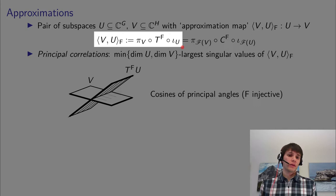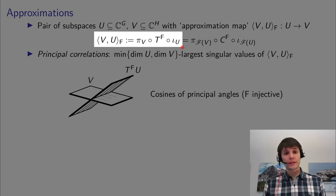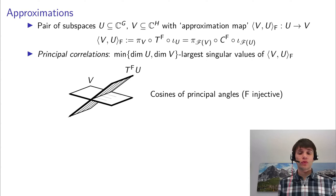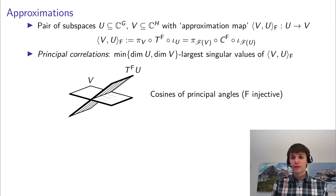This combination of three maps has the underlying idea of essentially computing all the inner products between vectors in U transformed by F, and then the inner product of those with functions in V. This is the basis-free way of expressing that. Of course, it can also be expressed in terms of the correlation matrix if we take the Fourier transformation.